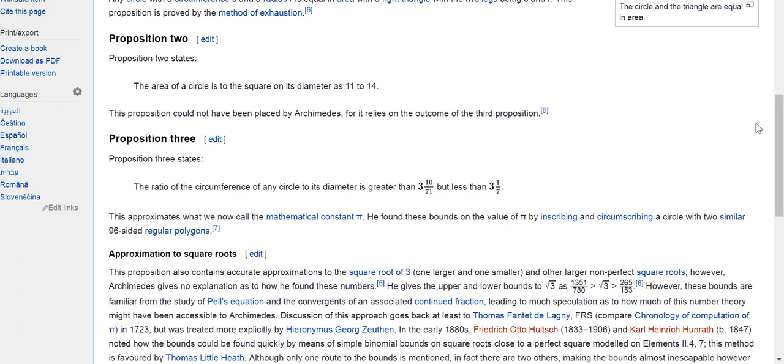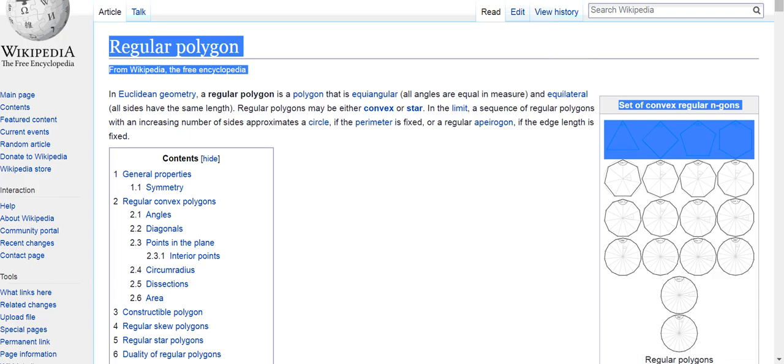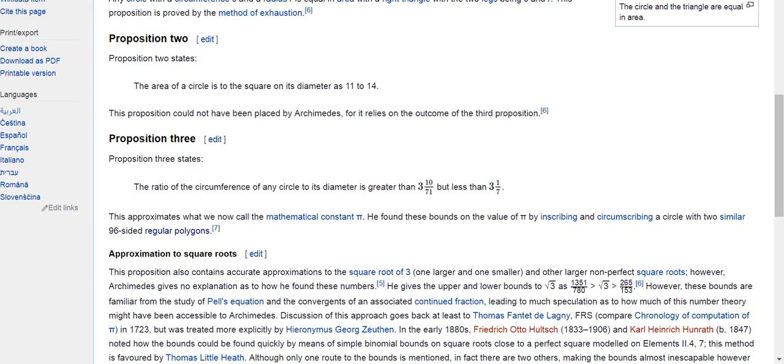And in his proposition three, he basically talked about a polygon of 96 sides. So he was able to increase the number of sides up to 96. Imagine there are no calculators, and he was able to determine the area of a polygon of 96 sides to get a very good approximation for the area of a circle.